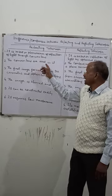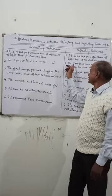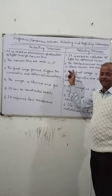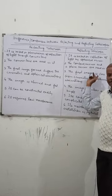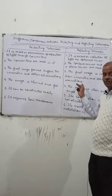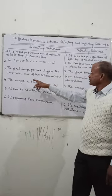In the refracting telescope, convex lenses are used. In the reflecting telescope, a concave mirror and a plane mirror are used.